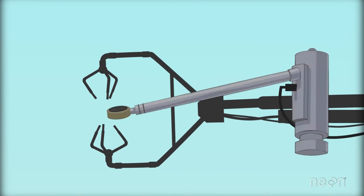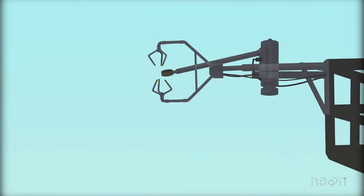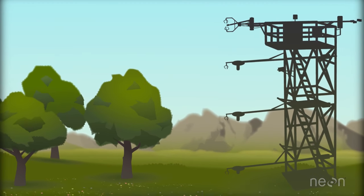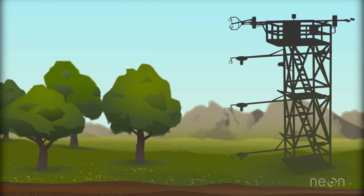Eddy covariance is primarily measured by two pieces of high-tech gadgetry mounted on tripods and towers above areas of interest, like forests, lakes, or agricultural areas.